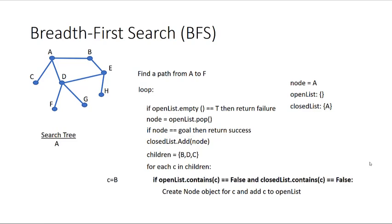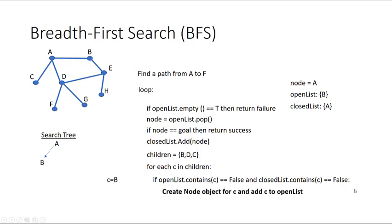For each child, we attempt to add them to the open list. We check: is the child in the open list, or in the closed list? If it's in neither, we create a node object for that child and add it to the open list, and the search tree is updated. Starting with B — B is in neither list, so we add B to the open list and form an edge from A to B in the search tree.